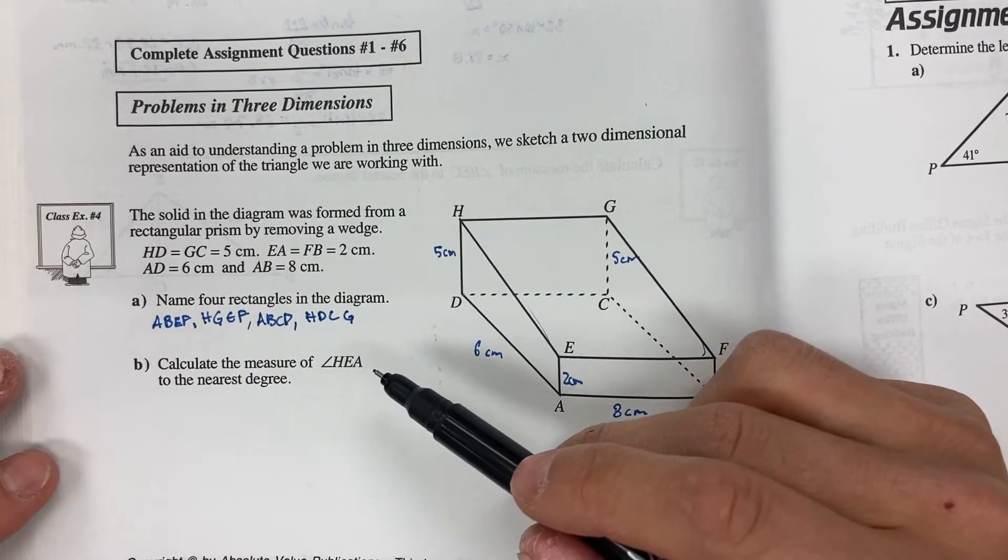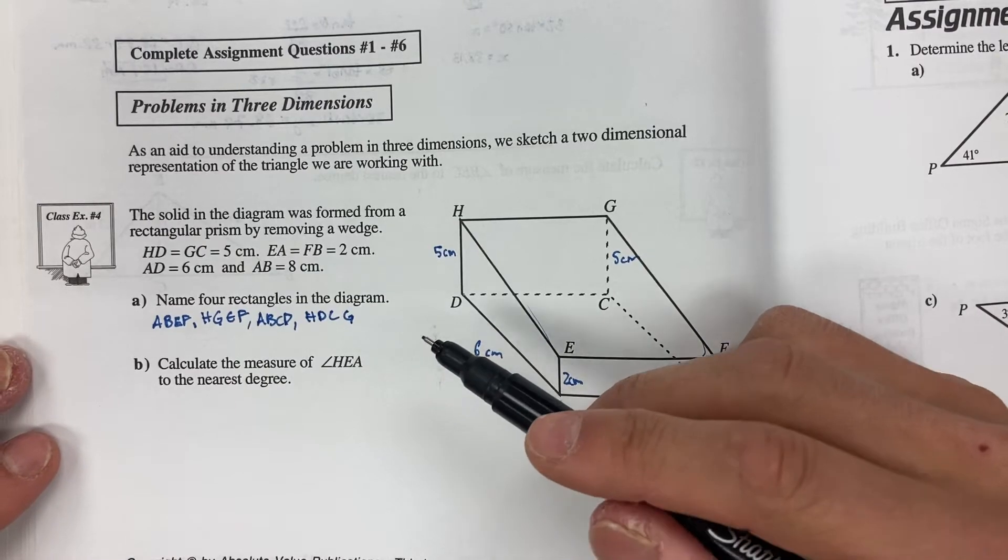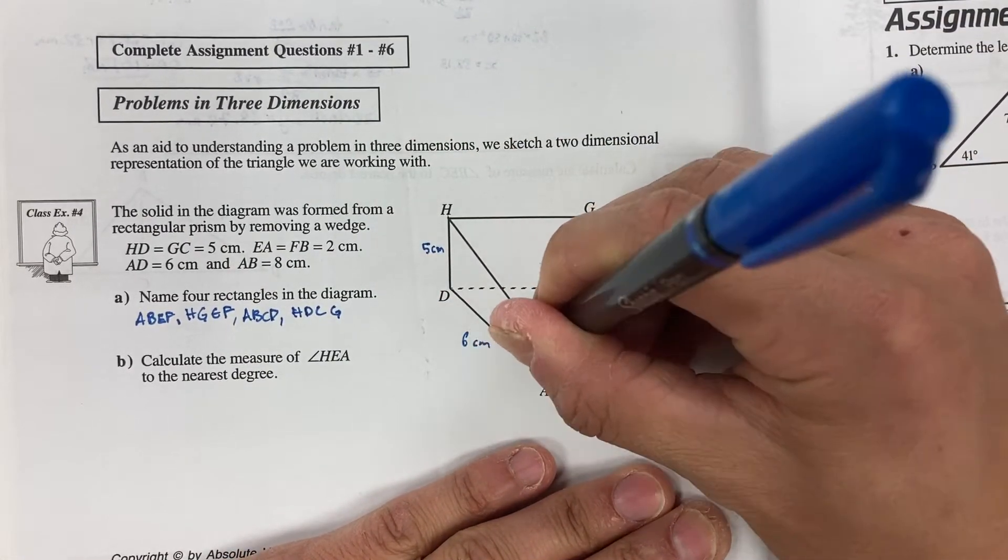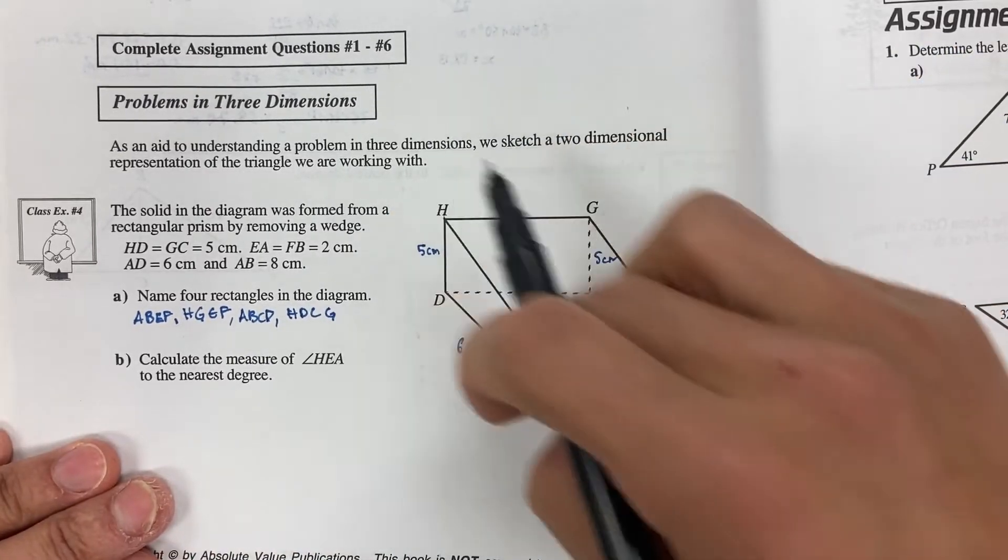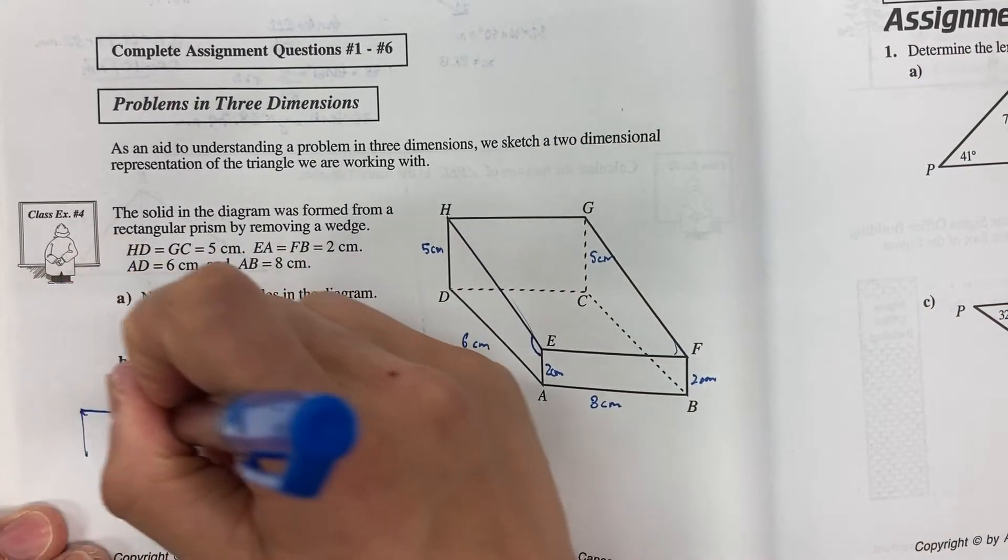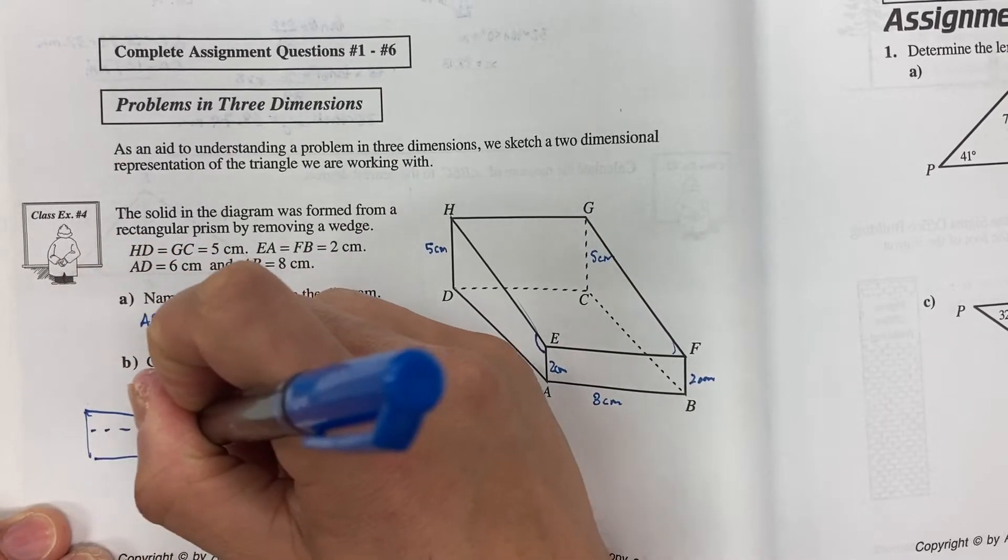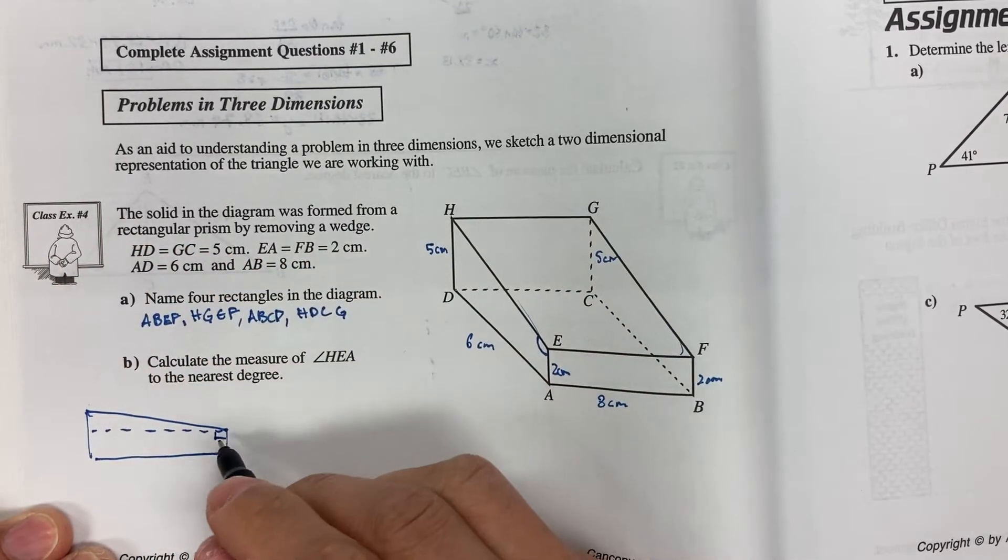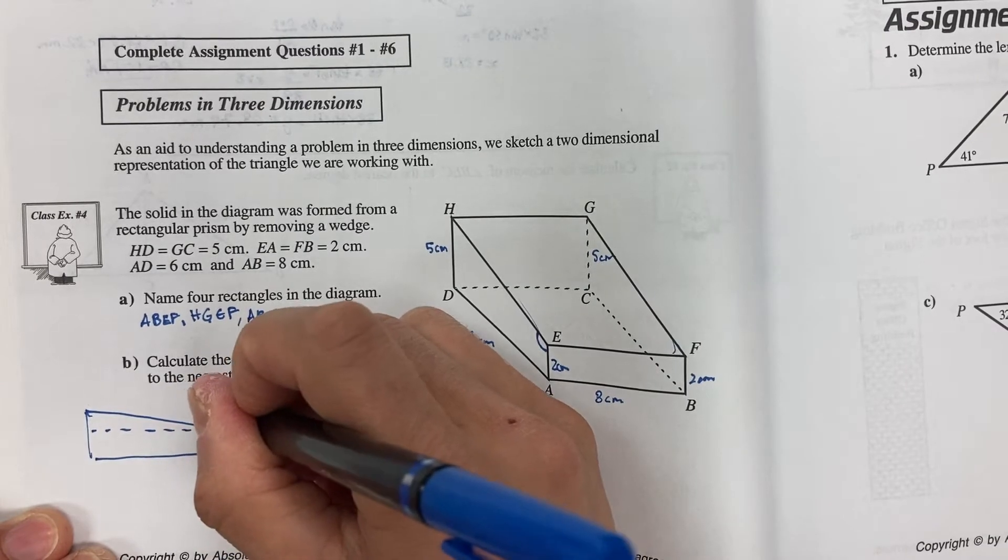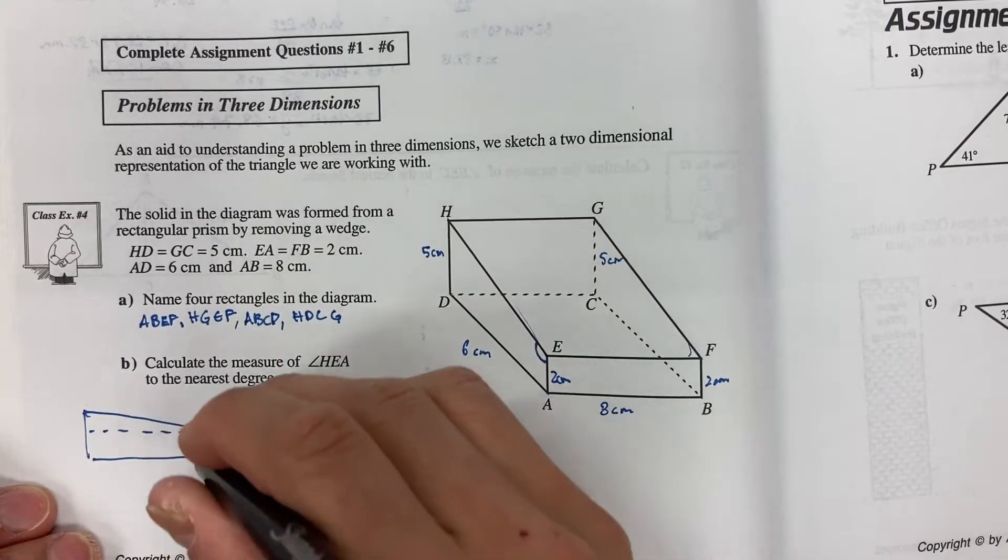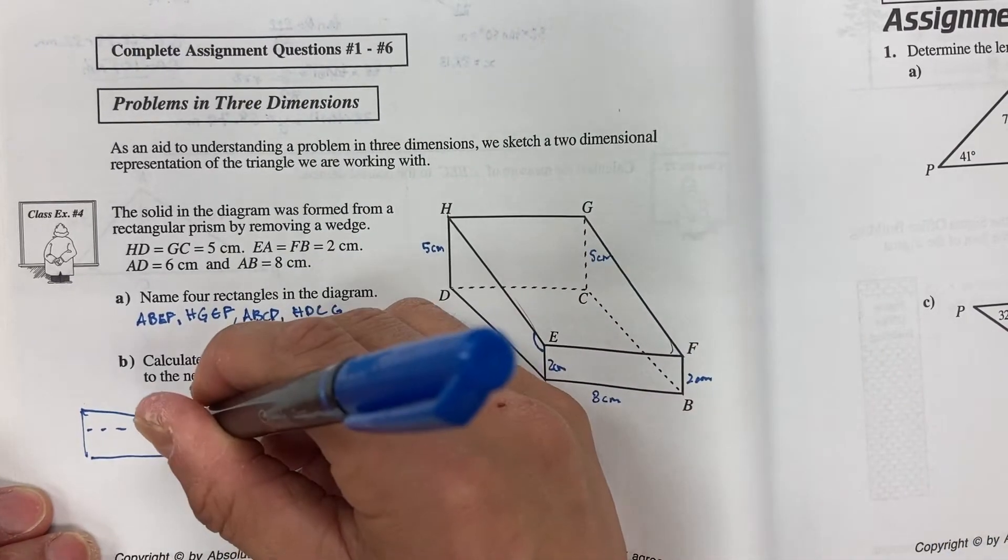Now we want to calculate the angle of HEA. So the angle of HEA is this big angle here. Now if I were to take this side and redraw it it's going to look something like this. I know that a portion of this makes up a right angle and then I have a smaller angle embedded inside. But what I need is that whole angle, this whole angle.